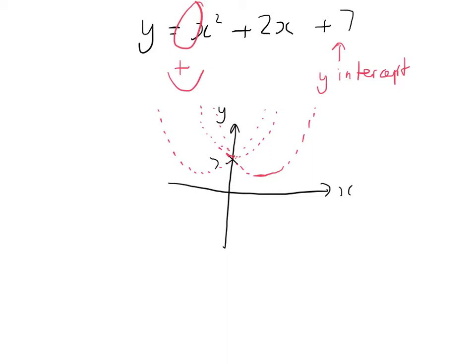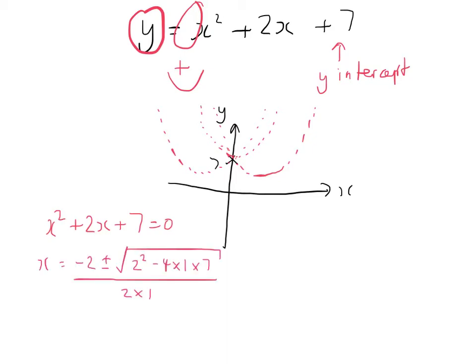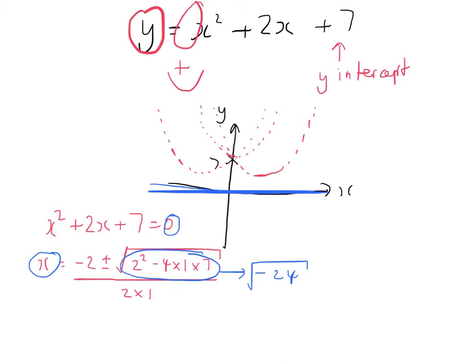We need to investigate further and find where it cuts the x-axis. Setting x squared plus 2x plus 7 equal to 0, the equation doesn't factorise easily, so we try the quadratic formula. But the discriminant — 2 squared minus 4 times 7, which is 4 minus 28 — gives minus 24. We'd need the square root of minus 24, which is impossible; there's no real number that multiplied by itself gives minus 24. So there is no x-coordinate where y equals 0, meaning the curve doesn't cut the x-axis at all.